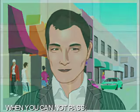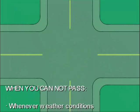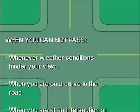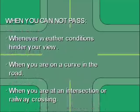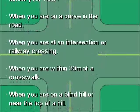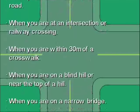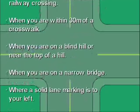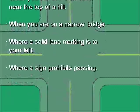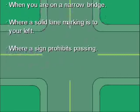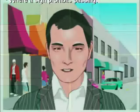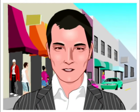When you cannot pass: whenever weather conditions hinder your view; when you are on a curve in the road; when you are at an intersection or railway crossing; when you are within 30 meters of a crosswalk; when you are on a blind hill near the top of a hill; when you are on a narrow bridge; where a solid line marking is to your left; or where a sign prohibits passing.